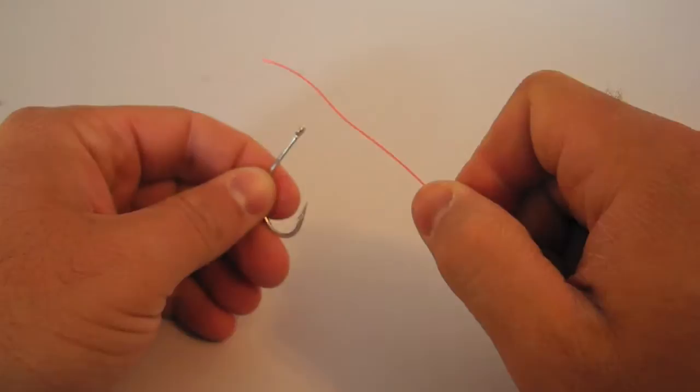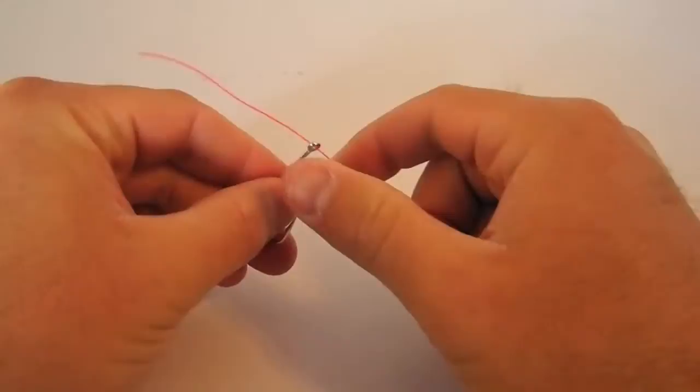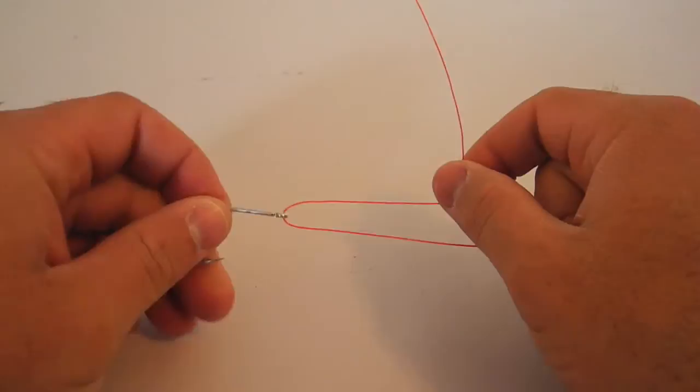First thing you're going to do is thread the tippet through the eye of the hook. It does not matter if you go up through the bottom or down through the top, either way, as long as you get it through the eye and you are holding that tag end, which is that short piece right there.